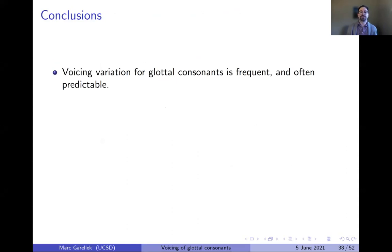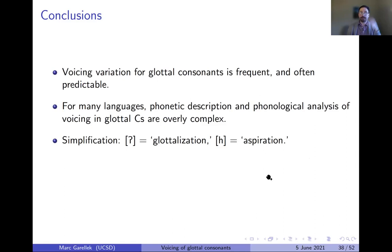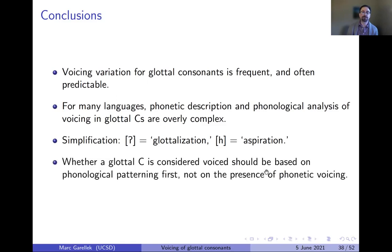To conclude, voicing variation for glottal consonants is frequent and very often predictable. For many languages, the phonetic description and phonological analysis of voicing in glottal consonants may be overly complex by over-specifying voicing when it is in fact predictable on phonetic grounds. To simplify: if a language has just a glottal stop, it's glottalization — pure and simple — without specifying whether it's voiceless or voiced. The decision about voiced versus voiceless should be based on the phonological patterning of the sound, not primarily on the presence of phonetic voicing attributable to respiratory or prosodic factors. Thank you.